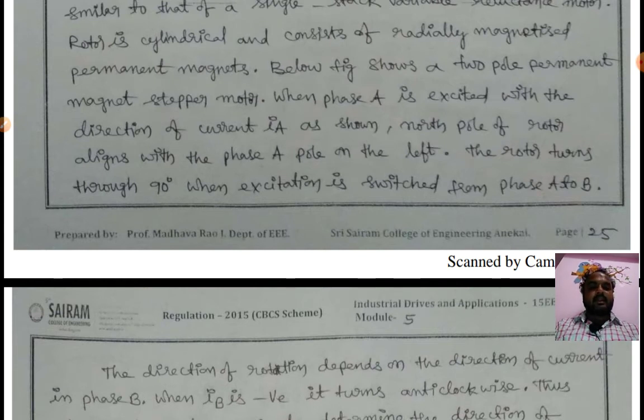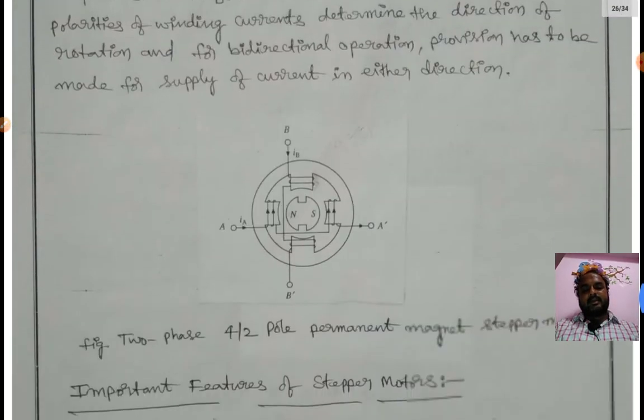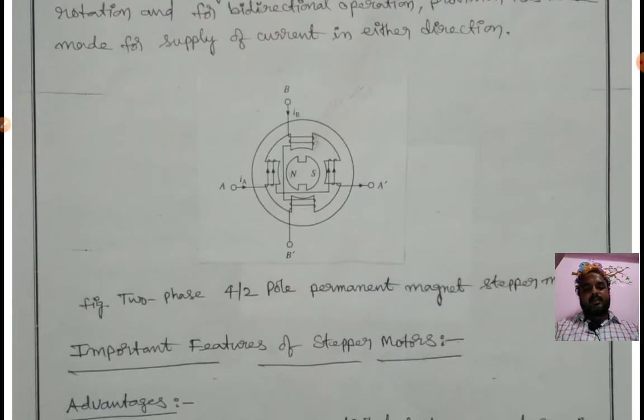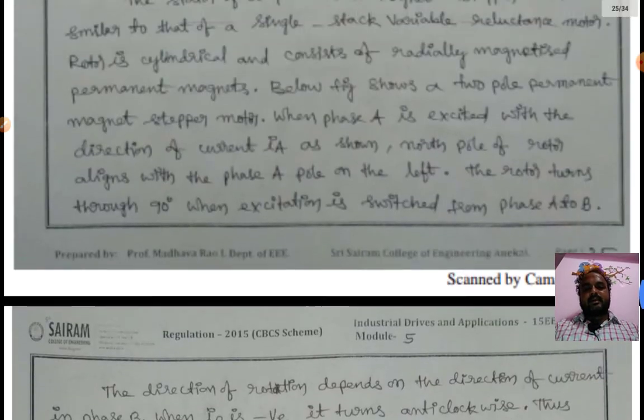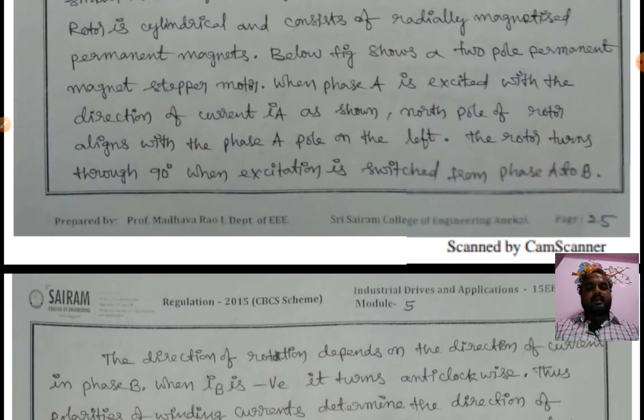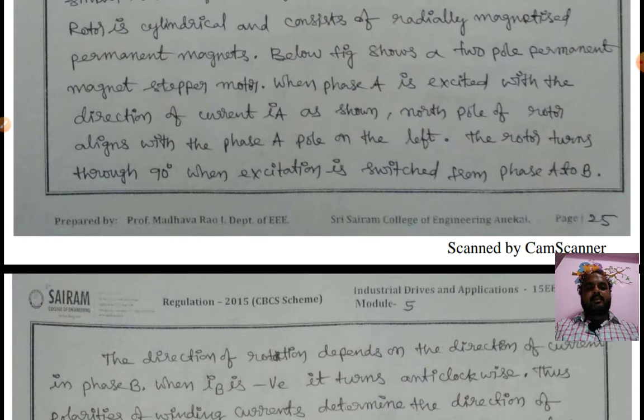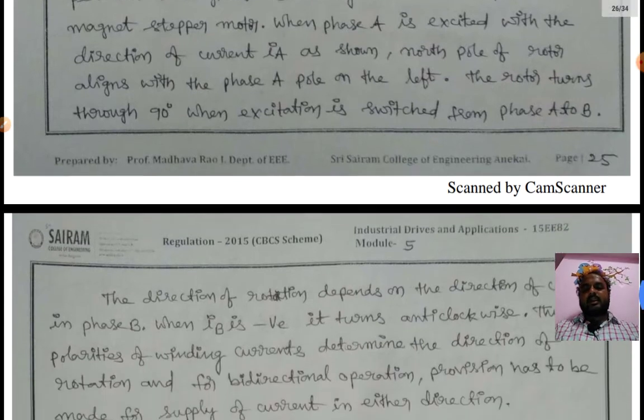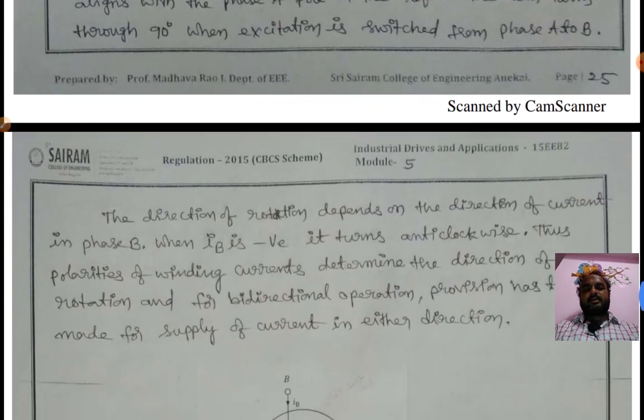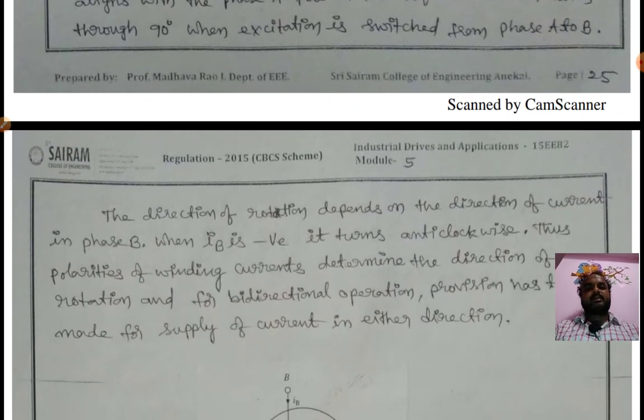Phase A is energized with direction of current IA, and north pole of rotor aligns with the phase A pole on the left. The rotor turns through 90 degrees when excitation is switched from phase A to B.